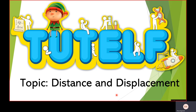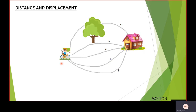Welcome to the tutorial. Today's topic is distance and displacement. There is a boy who wants to travel to his house — this is the initial position where the boy is standing, and the final position is the house. There are different paths through which he can travel to reach his final destination, the shortest path being path C. This shortest path that connects the initial position to the final position is the displacement.